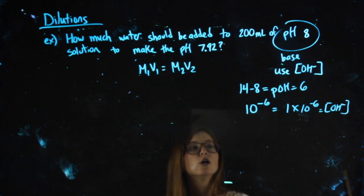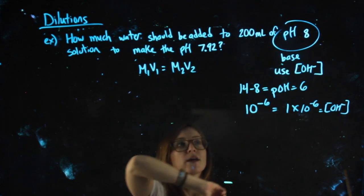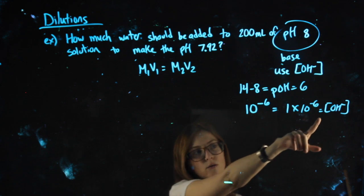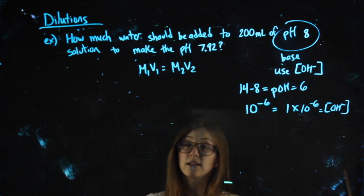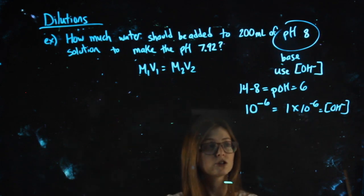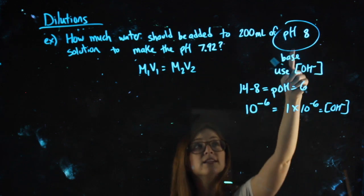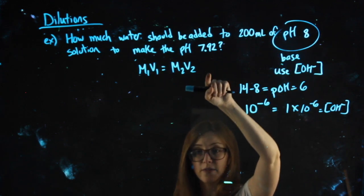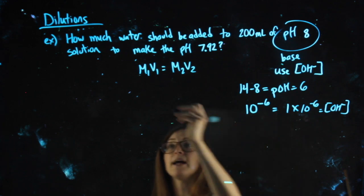So if I'm starting with a pH of 8, which has this OH- molarity, that's before I've diluted it, before I'm adding water to it. Another way I know that is it's further from neutral than this other pH. So this is my M1.